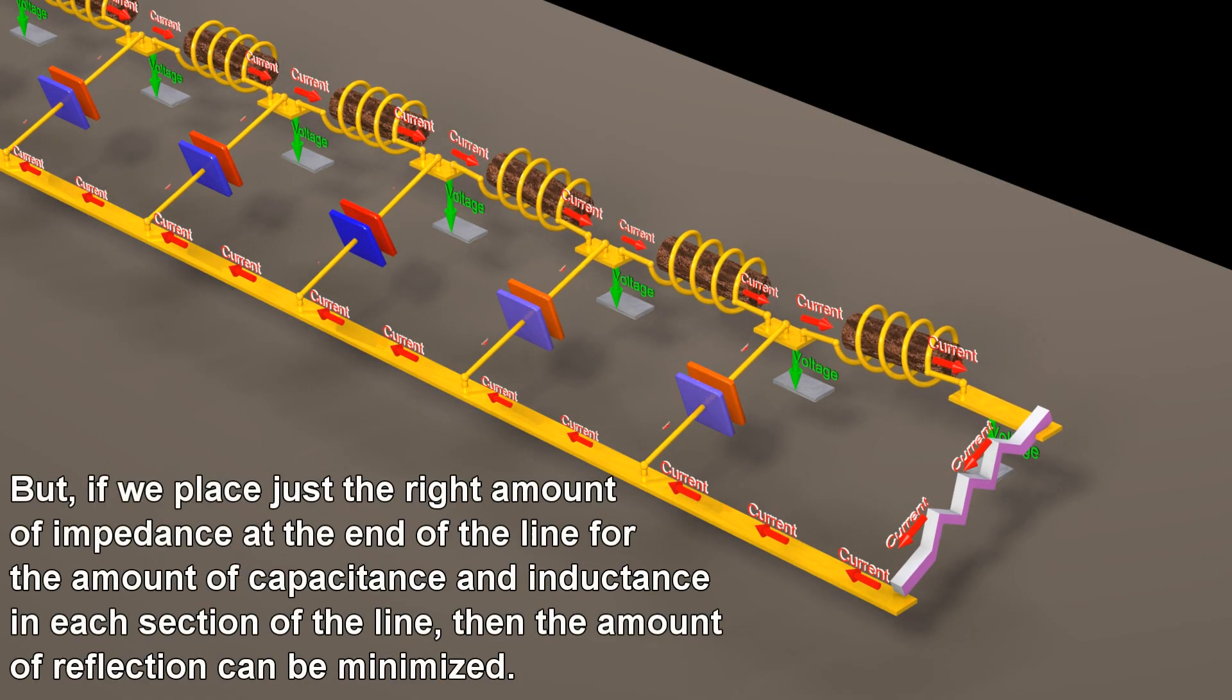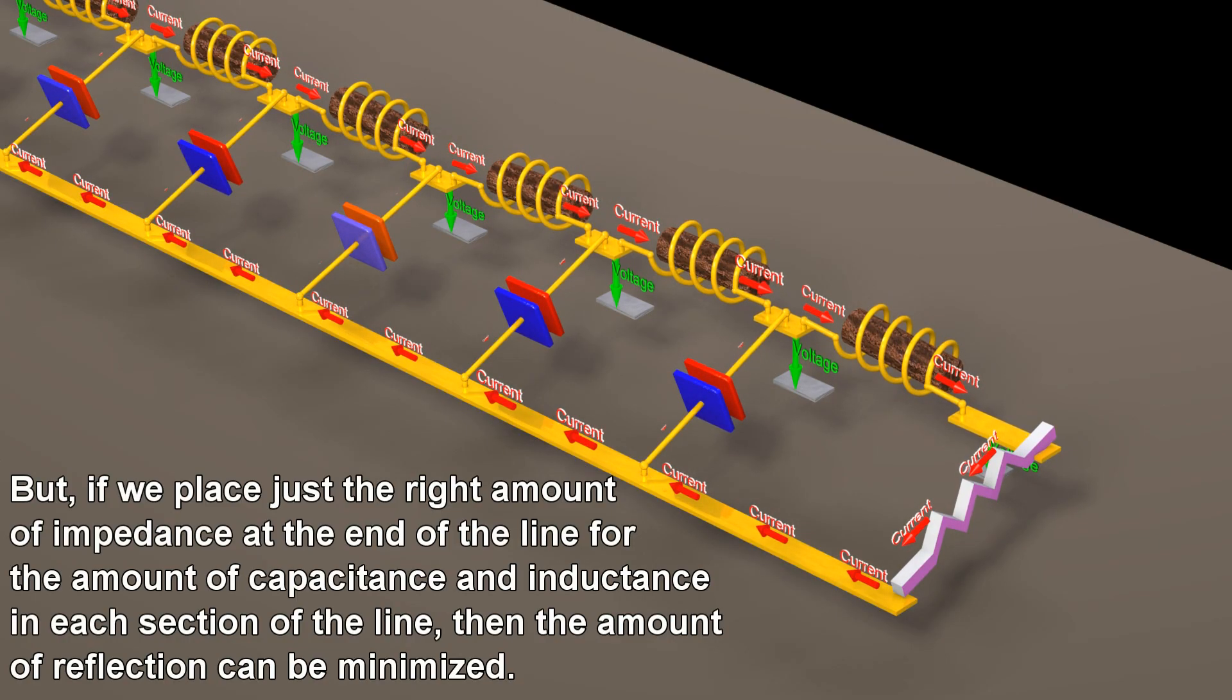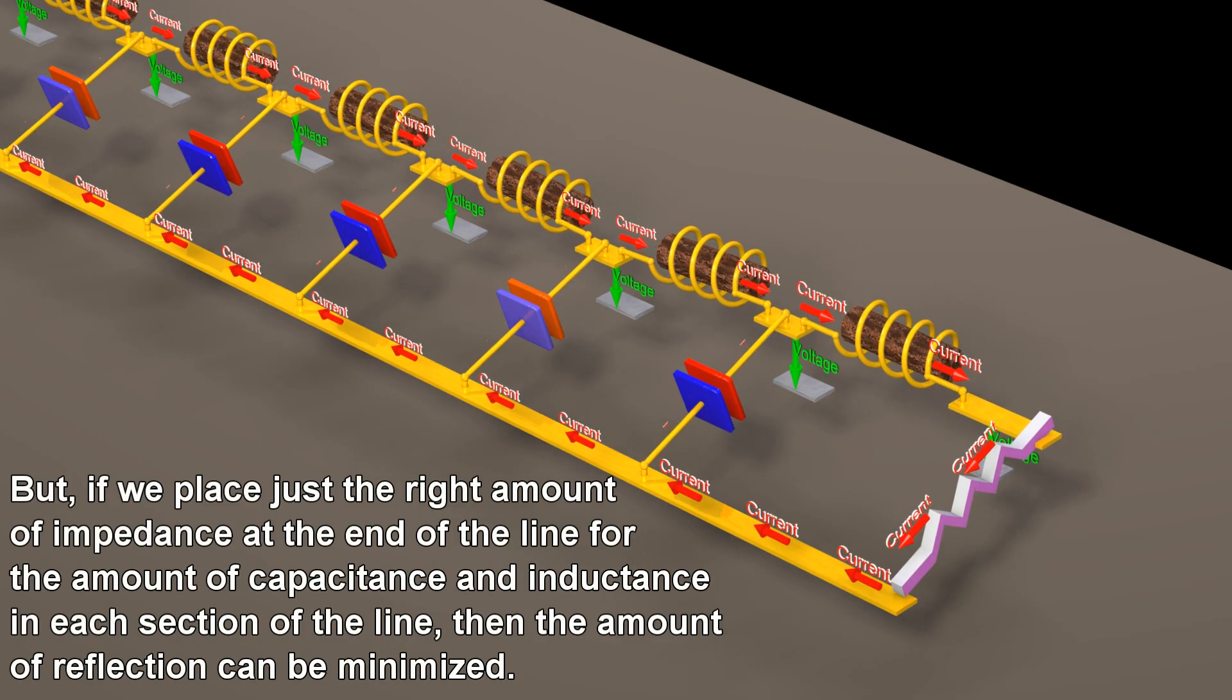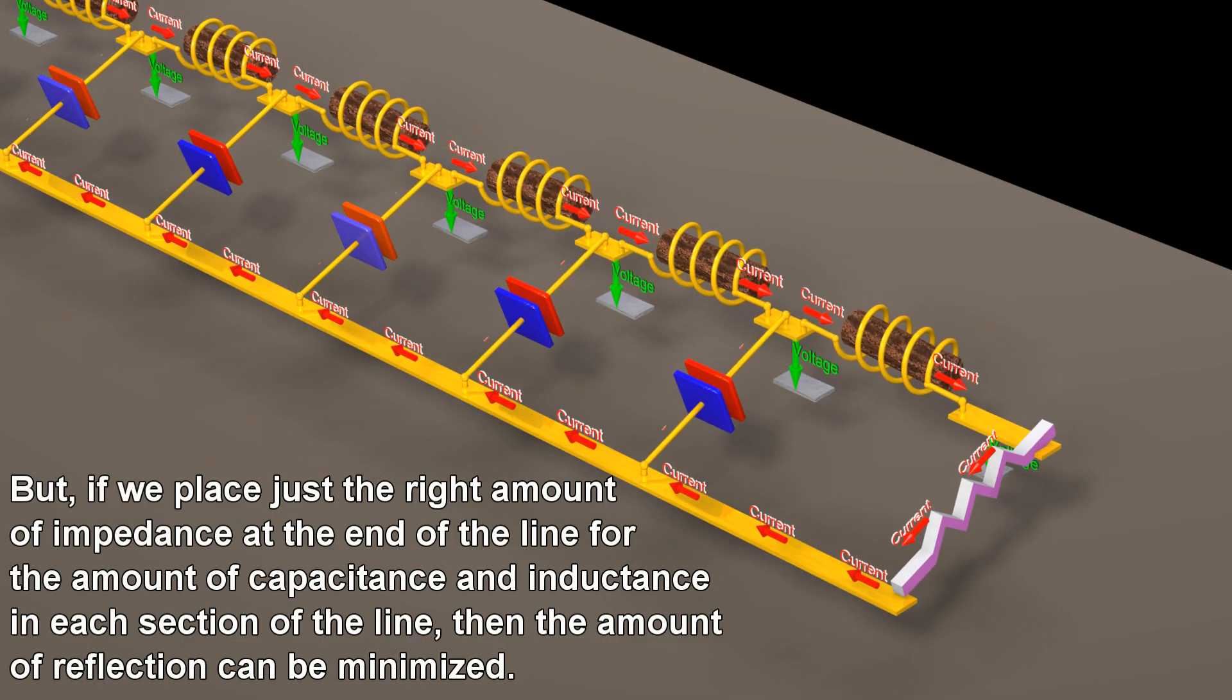But if we place just the right amount of impedance at the end of the line for the amount of capacitance and inductance in each section of the line, then the amount of reflection can be minimized.